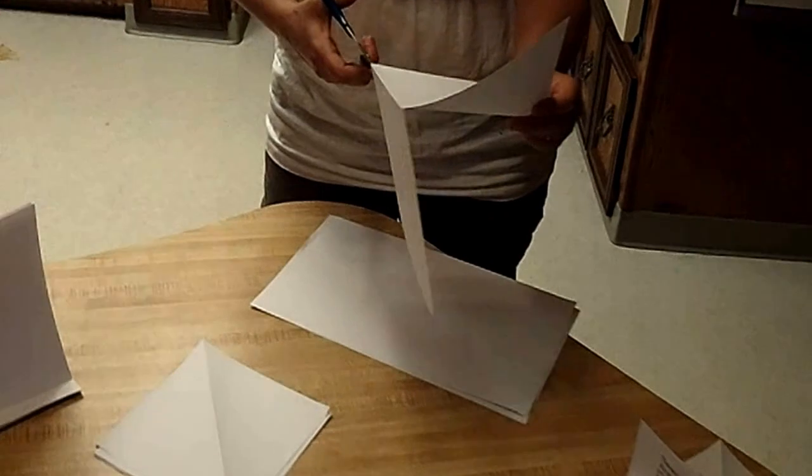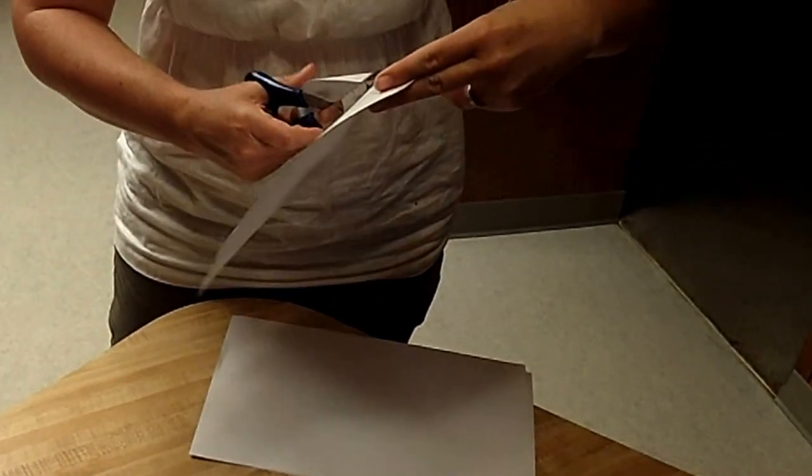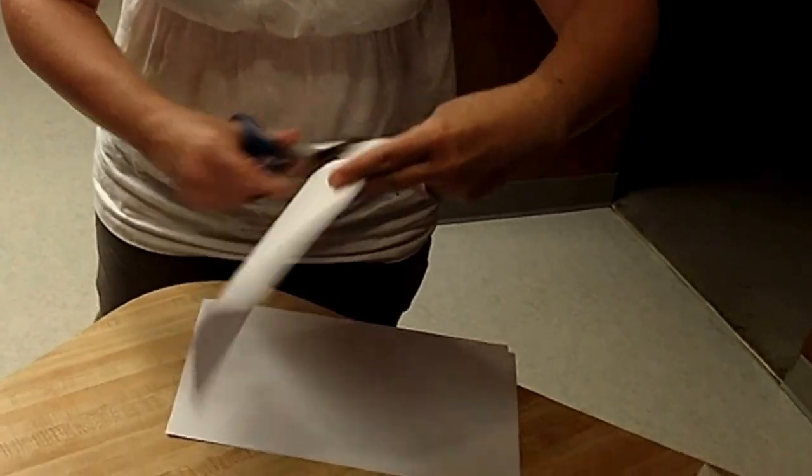Cut that. Then you're going to just use the rectangle you've created and do a triangle fold so that you can make it a perfect square.